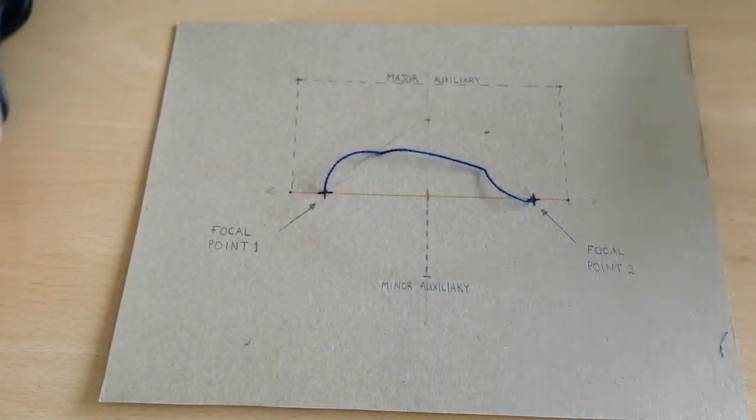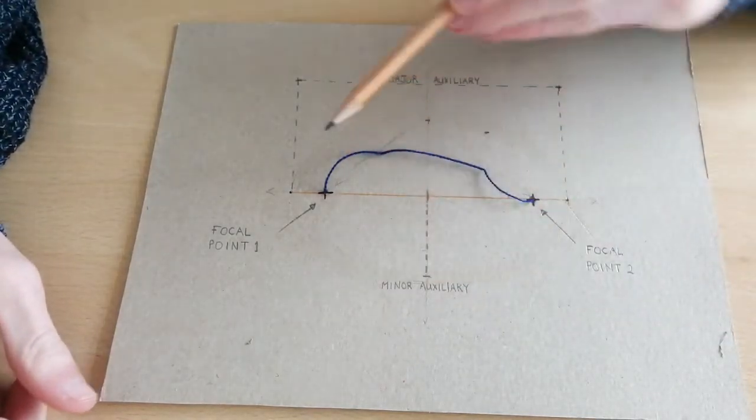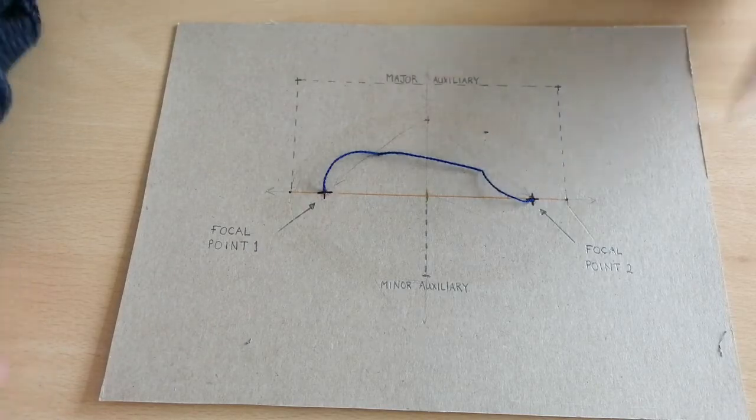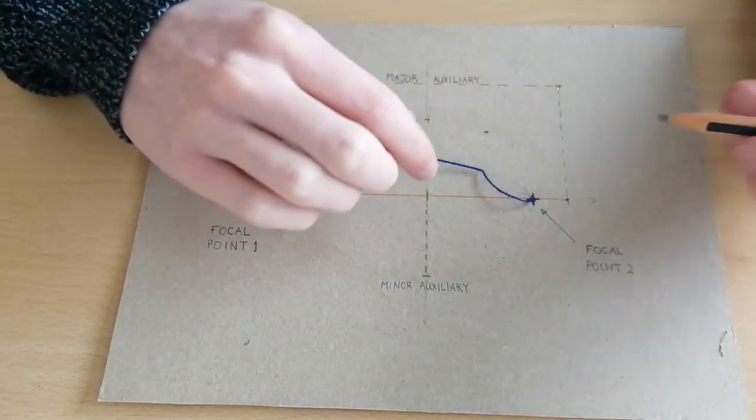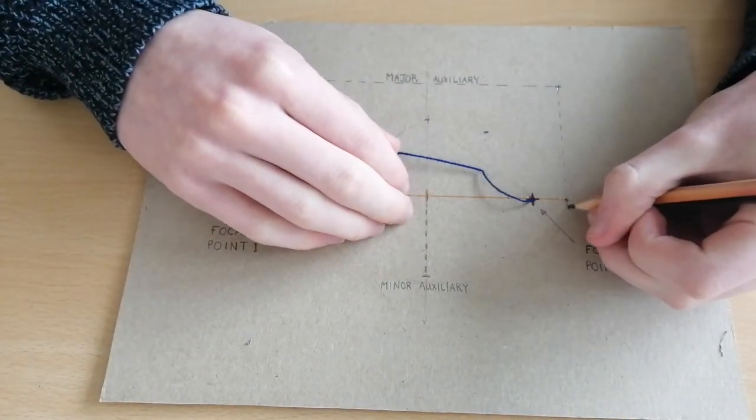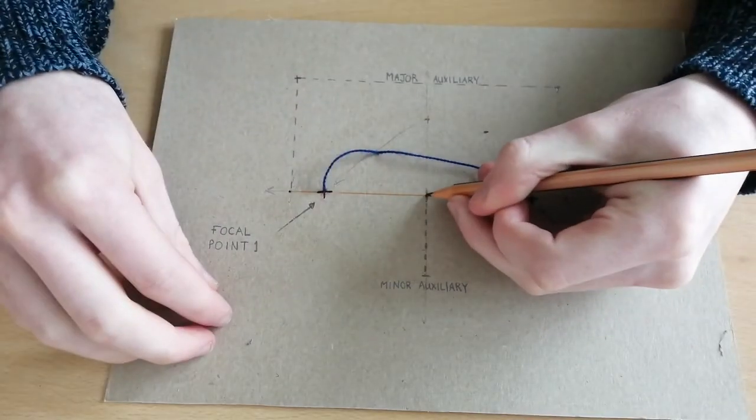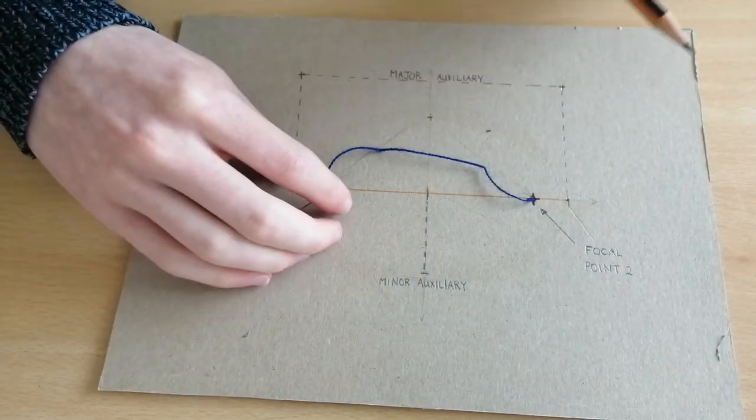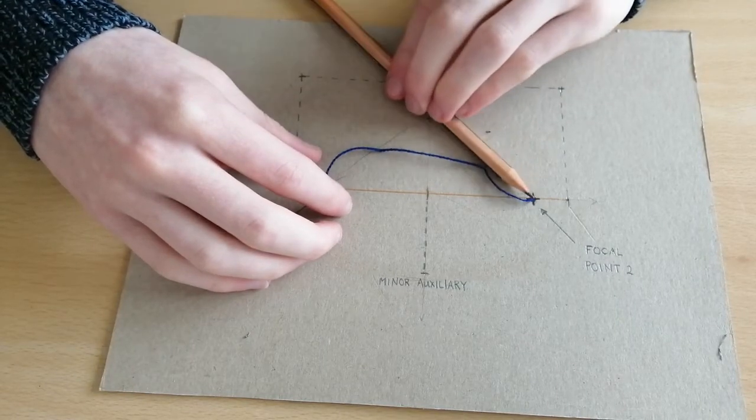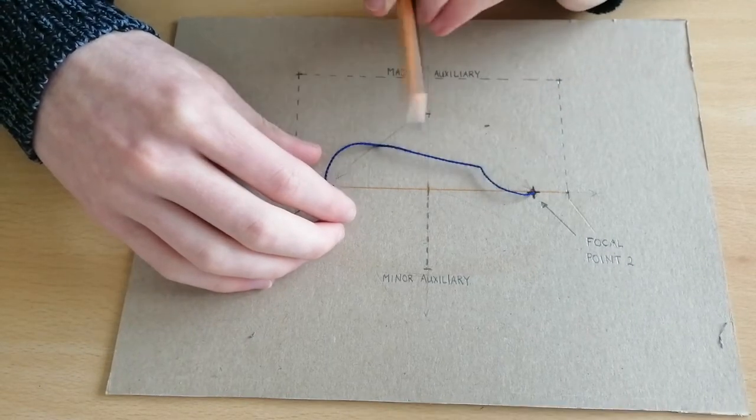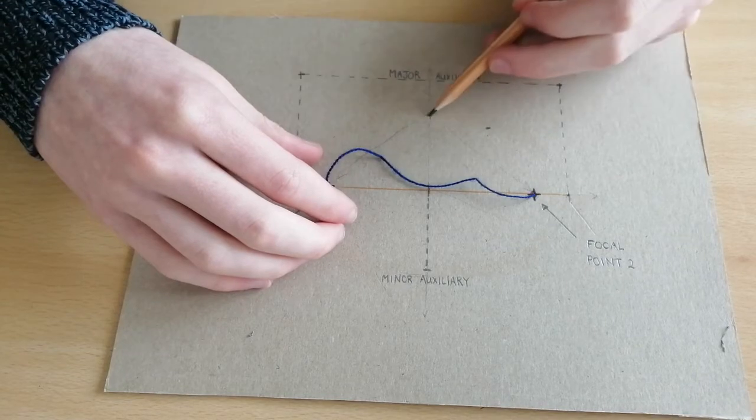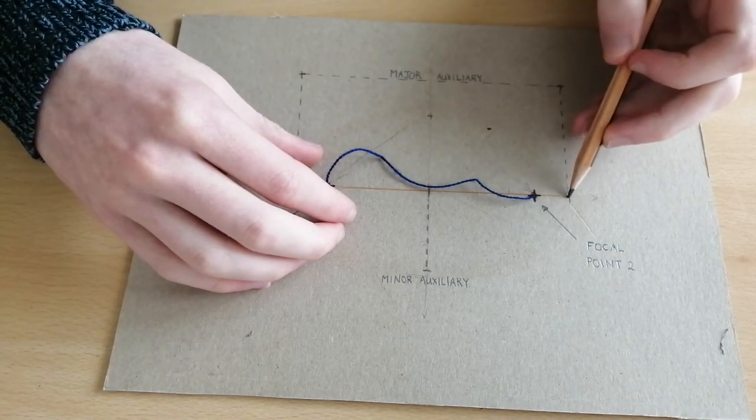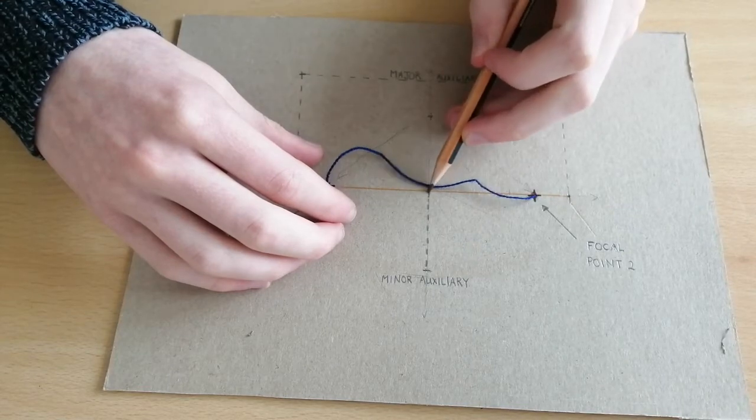The next features that we're going to be talking about is our focal points, focal point 1 and focal point 2. Now the way in which we find these focal points is that we take the length of half of our major auxiliary, we put it on a compass and we swing from the top of our minor auxiliary, and bring it down such that the length from here to here is equal to the length of half of our major auxiliary.